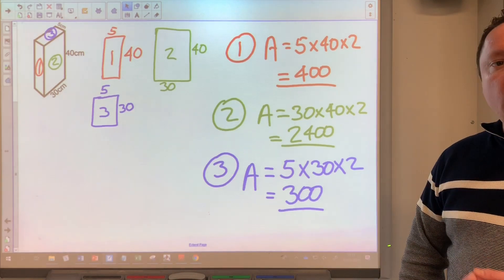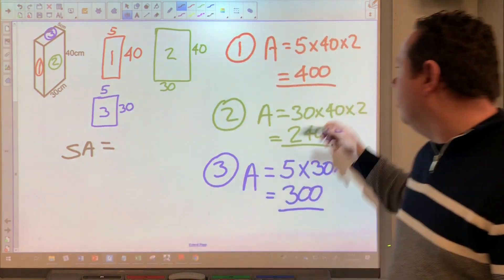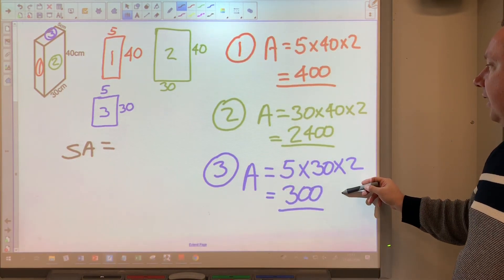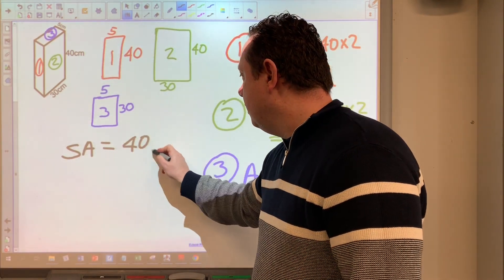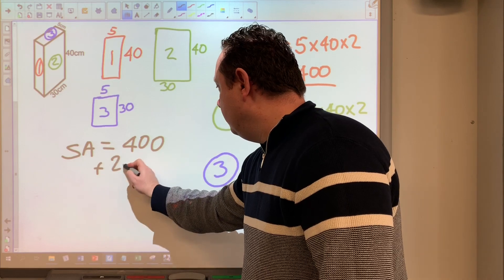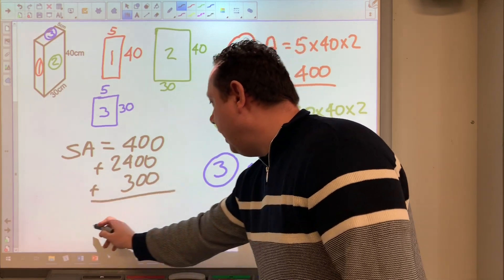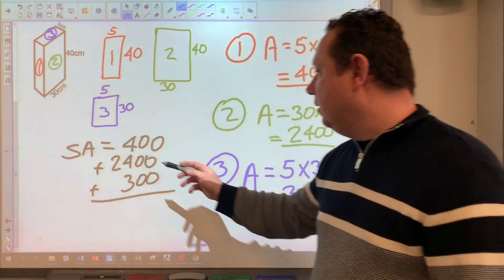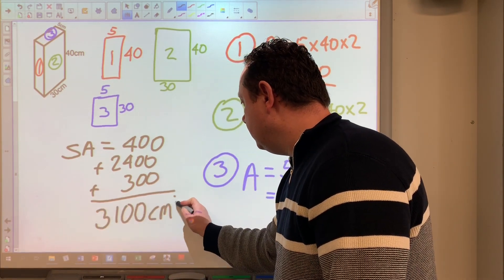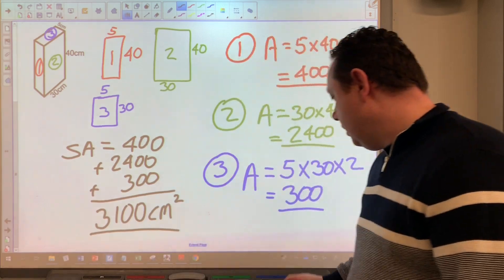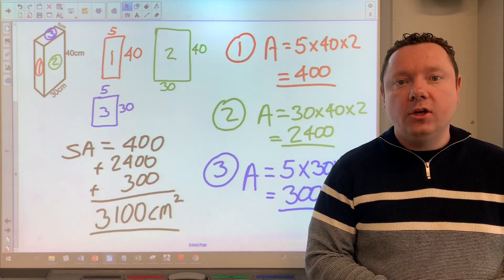So now we move on to work out our total surface area. Remember the surface area is just adding up our areas of all our spaces. So 400 plus 2,400 plus 300. And we get a total answer of 3,100 square centimeters. And that really is everything you need to know about working out the surface area of a cuboid.